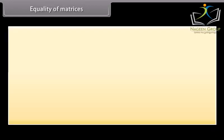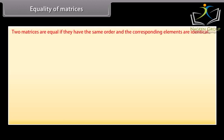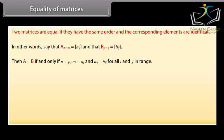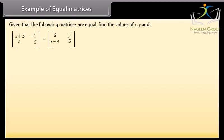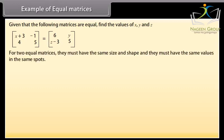Equality of matrices. Two matrices are equal if they have the same order and the corresponding elements are identical. In other words, say that A N by M is equal to A I J and that B P by Q is equal to B I J. Then A is equal to B if and only if N is equal to P, M is equal to Q and A I J is equal to B I J for all I and J in range.